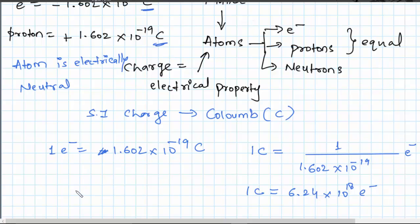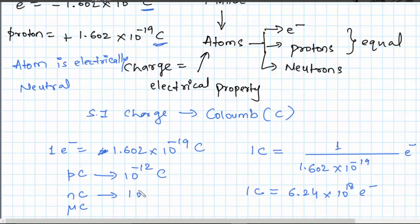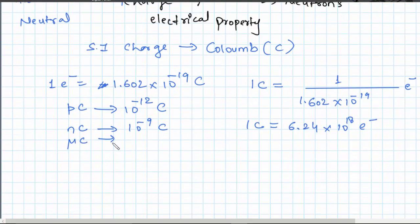That is why in reality, when we talk about charges, they are measured in picocoulombs, nanocoulombs, or microcoulombs. Picocoulomb stands for 10⁻¹² coulombs, nanocoulomb for 10⁻⁹ coulombs, and microcoulomb for 10⁻⁶ coulombs.